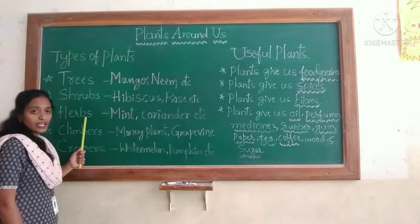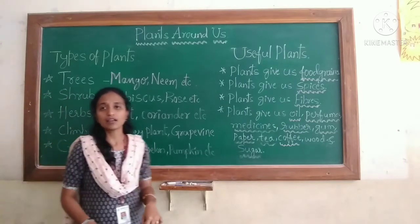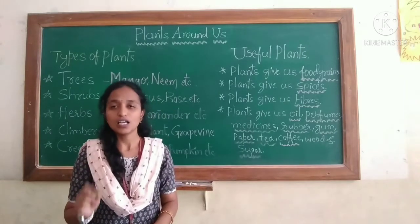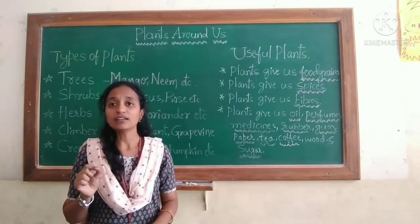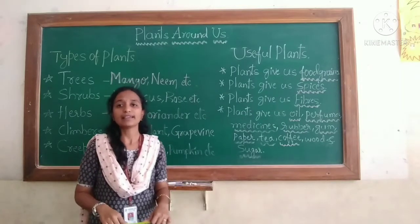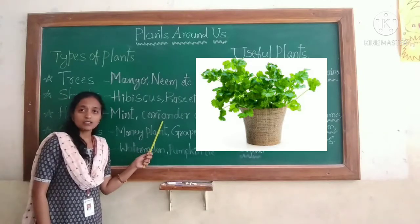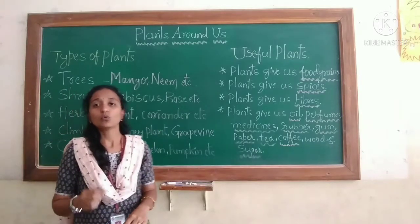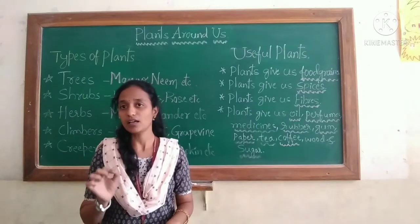What do you mean by herbs? Very small plants are called herbs. They are soft and they have a green stem. Examples: mint, coriander, grasses, and some water plants are also considered as herbs.